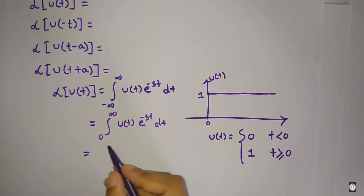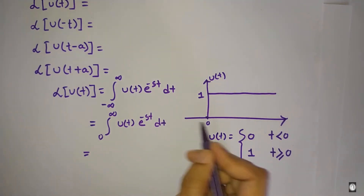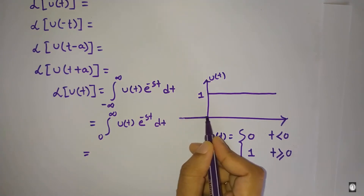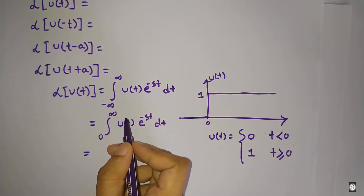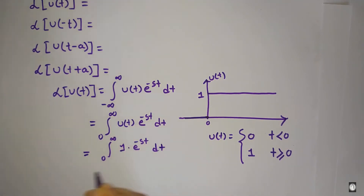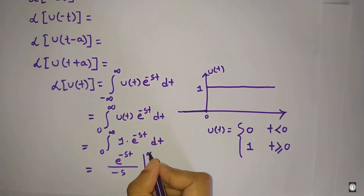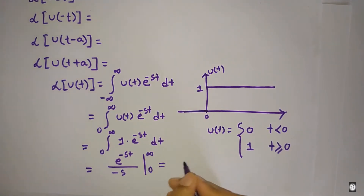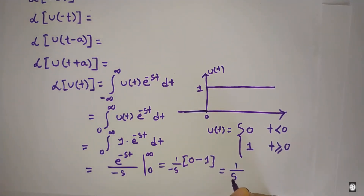The unit step function from 0 to infinity is equal to 1, and from minus infinity to 0 it is equal to 0. So the integration simplifies to e to the power minus st divided by minus s, evaluated from 0 to infinity. Taking the limit, e to the power minus infinity is 0, and e to the power 0 is 1. The ultimate result is 1 by s.